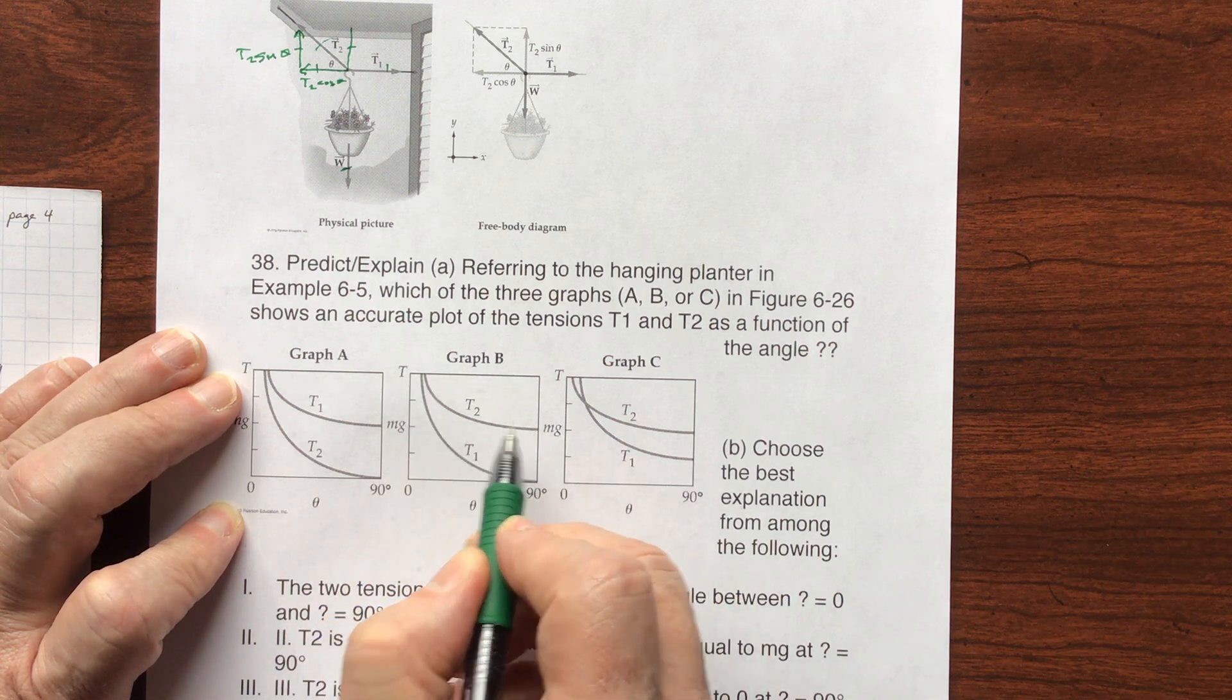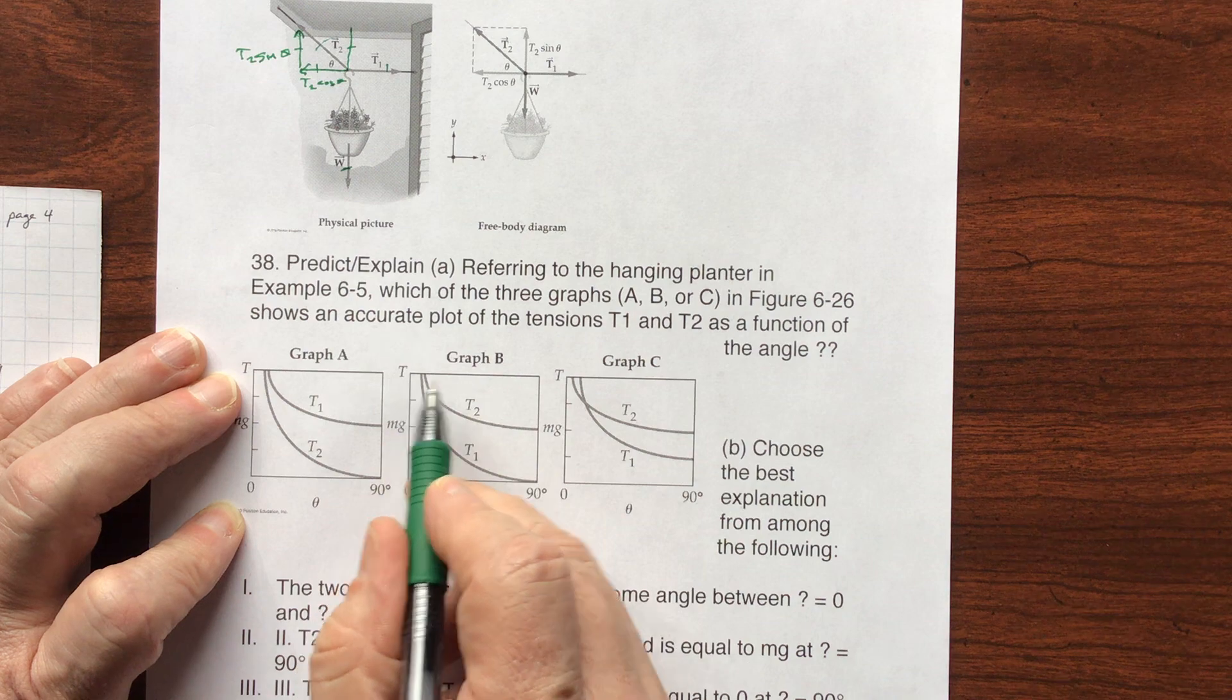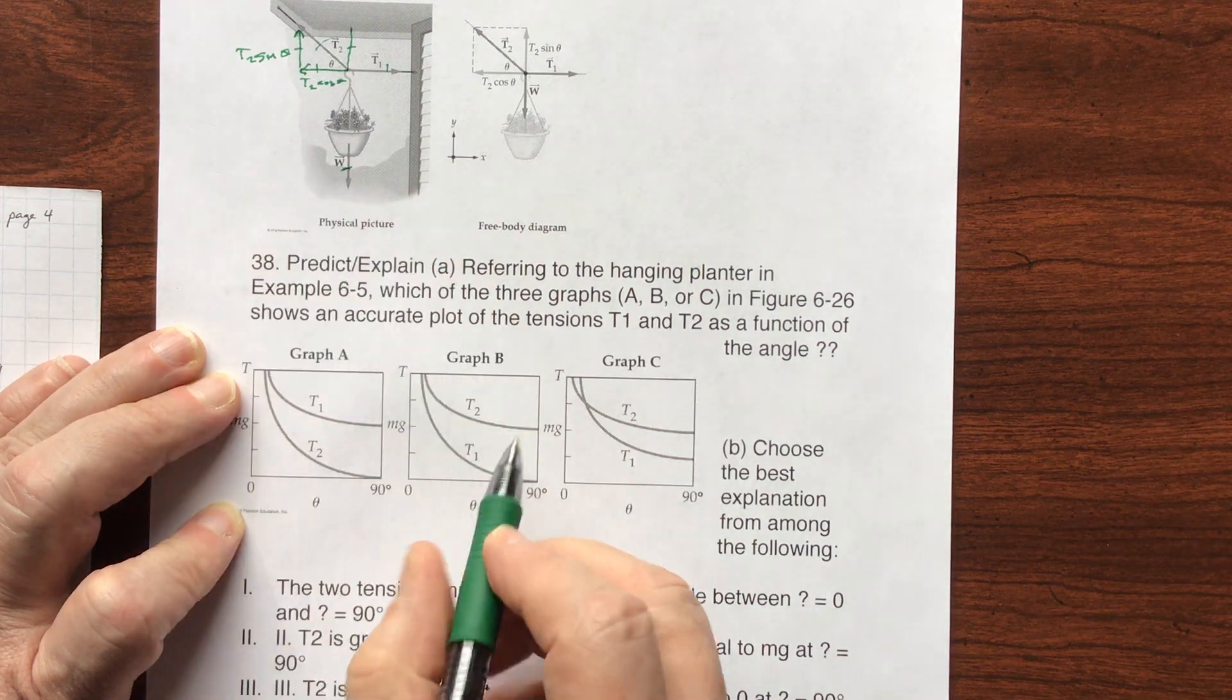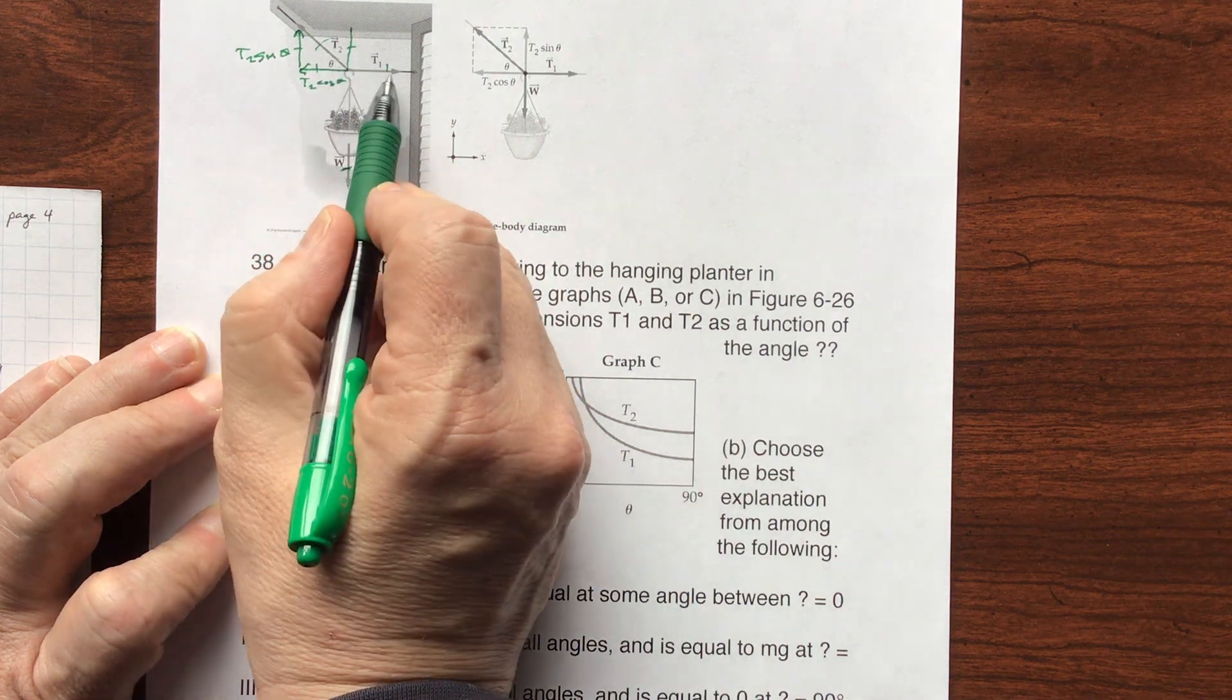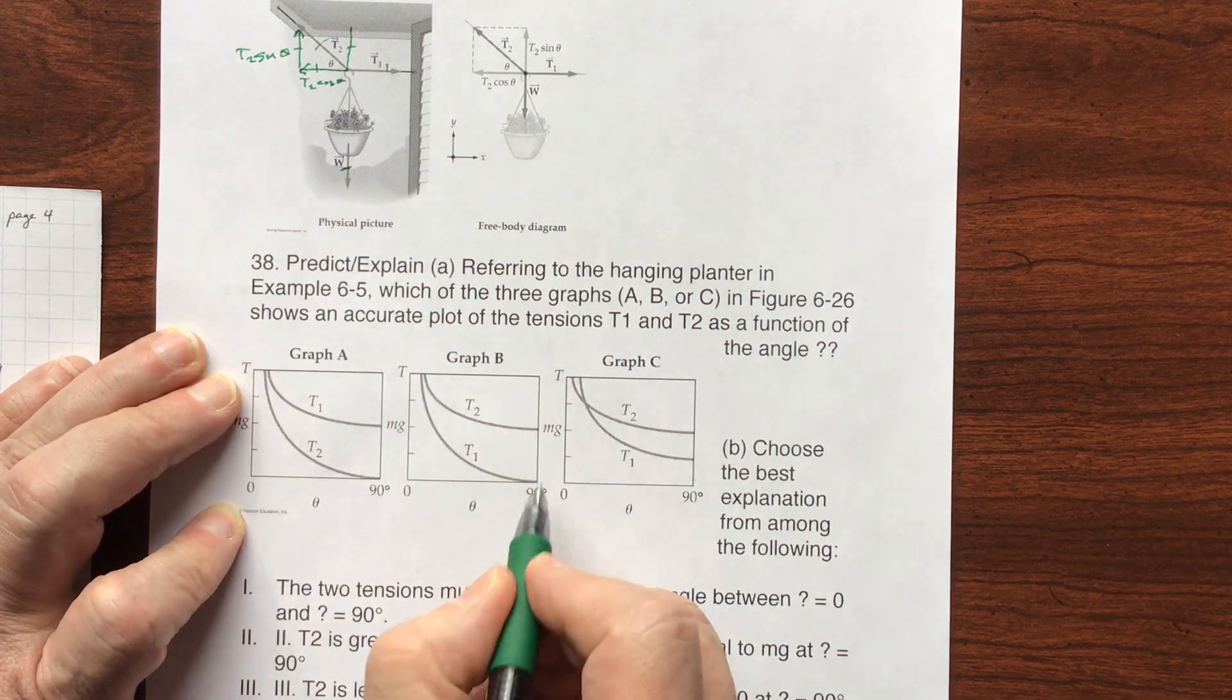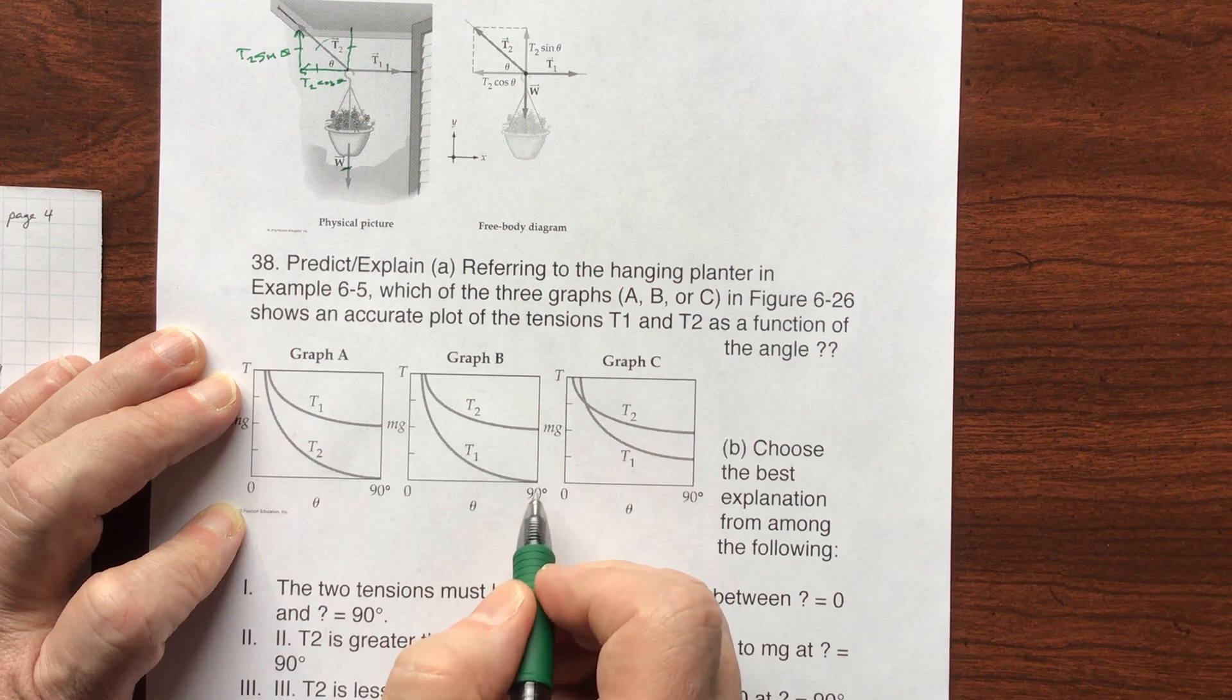Here, T2, MG, I like this one, do you see? At T2 is supporting all the weight here. What's happening when it gets to 90 here? Well, if this is supporting all the weight, this one's getting canceled down to 0, and it does go down to 0.